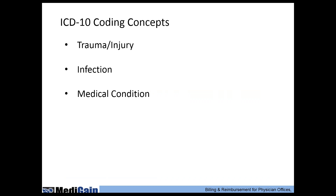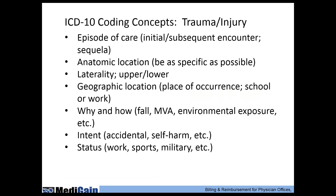Three other elements crossing different specialties: trauma and injury, infection, and medical condition. For trauma and injury, document the episode of care — initial, subsequent, or sequelae — or the code will be rejected. Be as specific as possible on anatomic location and laterality. Include documentation on geographic location — did it occur at school or at work? Why did the injury occur — motor vehicle accident, environmental exposure? Was there self-harm intent versus accident status? There may be multiple codes for one injury covering anatomic location, geographic location, and injury type.